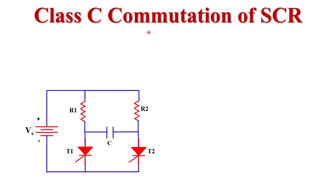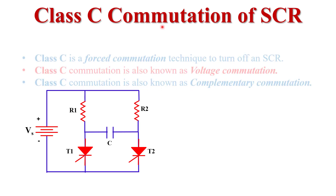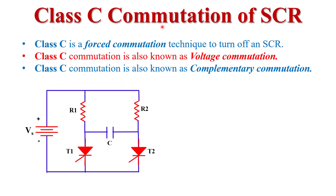Before I discuss Class C commutation of SCR, we must know what commutation means. Commutation is basically a process of turning off any device — or in terms of SCR, the turning off process of SCR is known as SCR commutation. There are basically two types of commutation techniques: first is natural commutation and second is forced commutation. Class C commutation falls under the category of forced commutation.